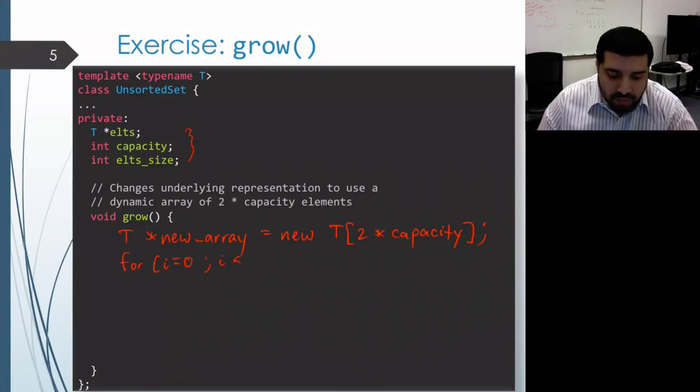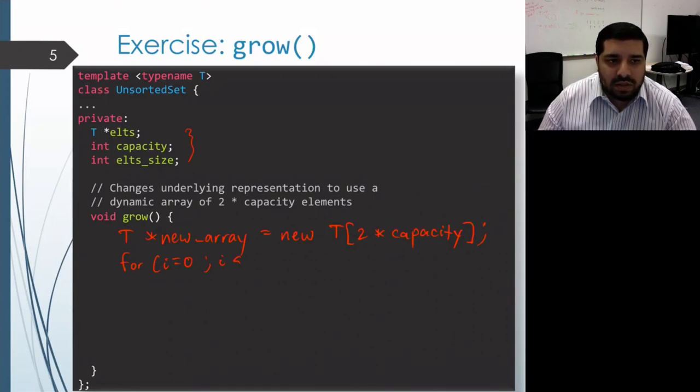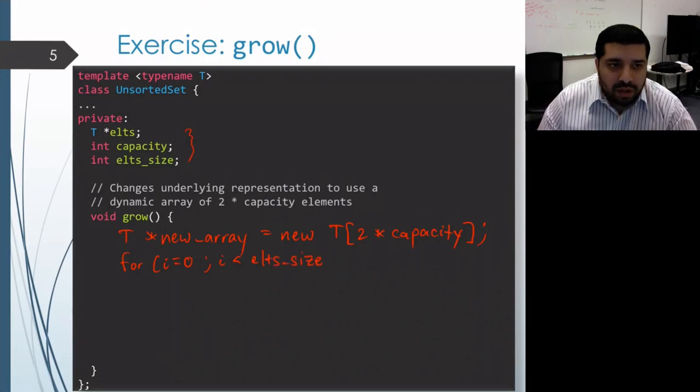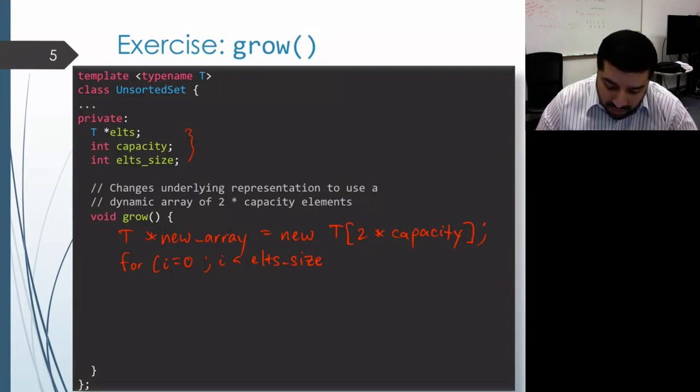Now for the upper bound, we can either use els_size or capacity. If grow is only invoked when the two are equal, then it doesn't matter which one we use. However, if grow ever gets called before the older array is full, then it'll actually be better to use els_size as our upper bound, because that way we'll avoid copying the junk values that are in the rest of the array.